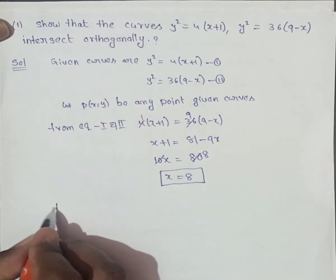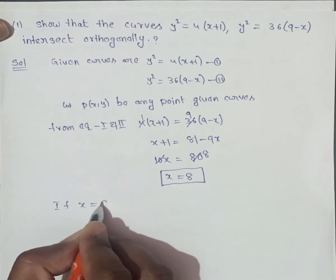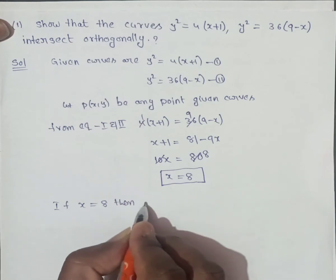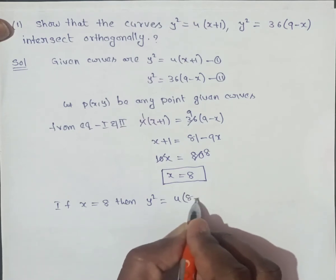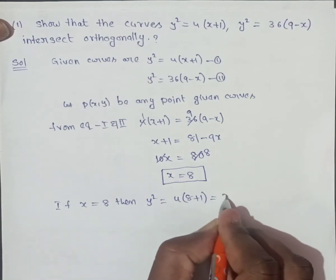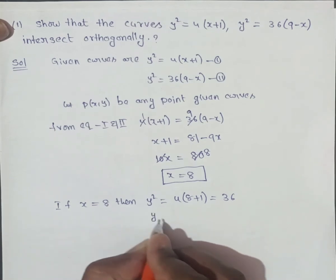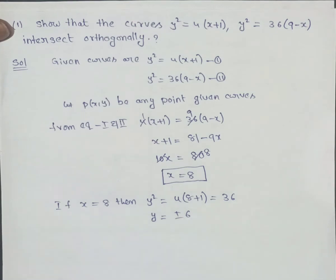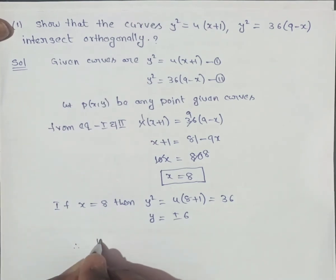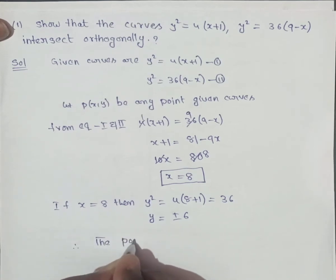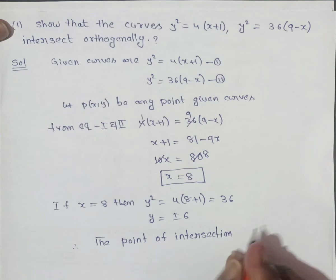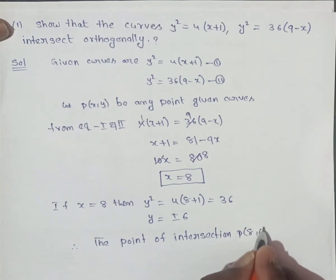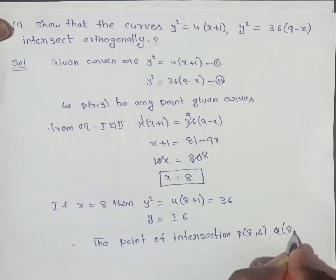If X is equal to 8, then Y square is equal to, from equation 1, 4 into X plus 1. So 4 into 8 plus 1 is 9, 4 times 9 is 36. Y square is equal to 36. Y is equal to plus or minus 6. Therefore, the point of intersection P of 8, 6 and Q of 8, minus 6.